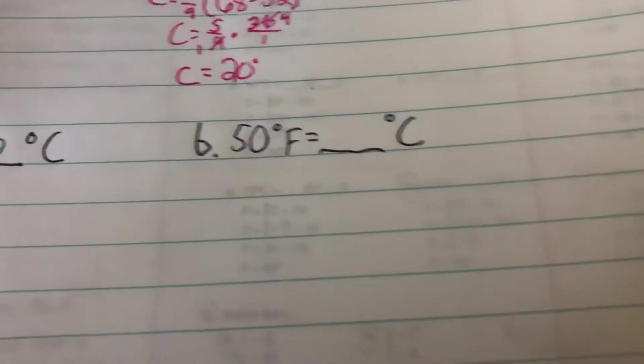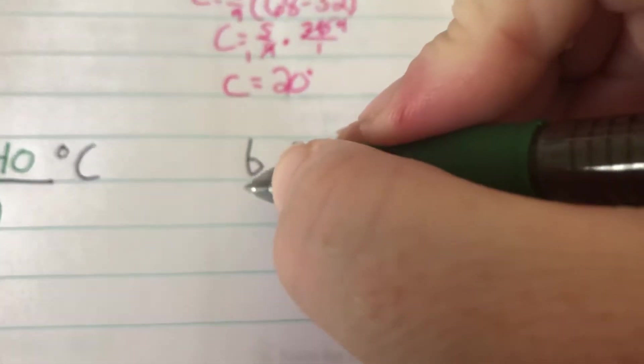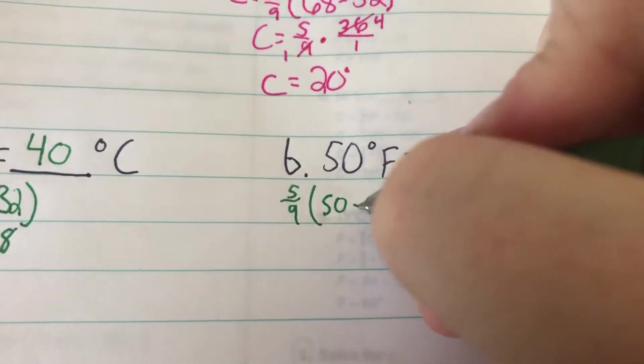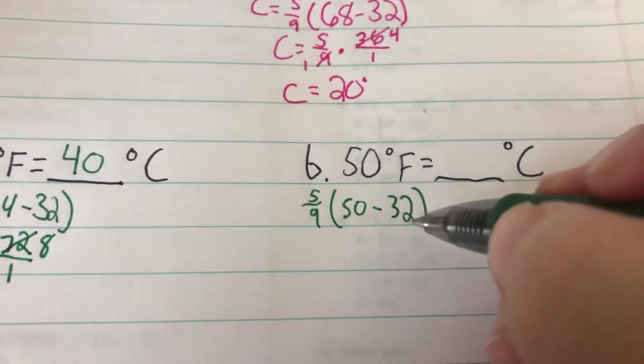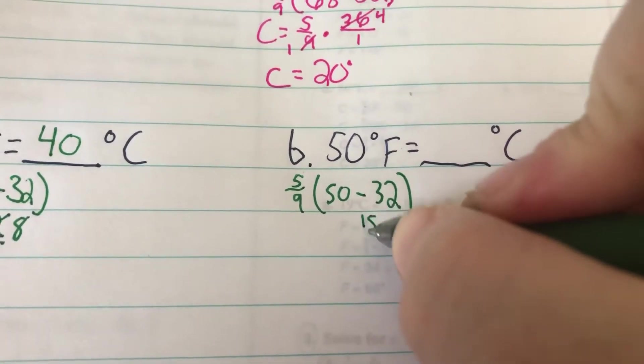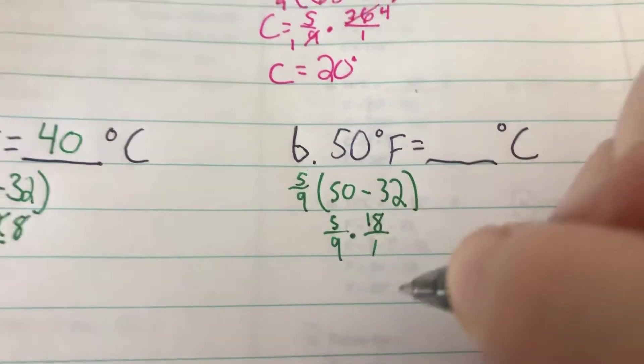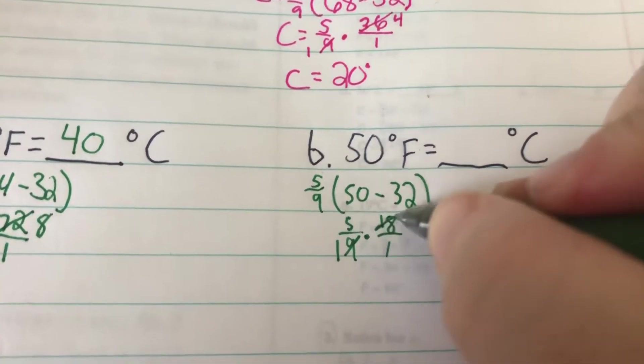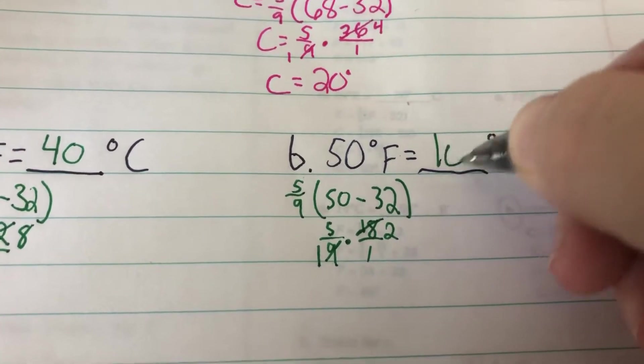For B, we get 50 degrees Fahrenheit and want to know Celsius. So 5/9 times 50 minus 32. 50 minus 32 is 18. 18 over 1 times 5 over 9. 9 can go into both of those. It goes into 9 once, into 18 twice. 5 times 2 is 10. It's going to be 10 degrees Celsius.